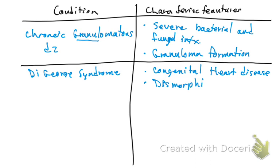DiGeorge syndrome also presents with dysmorphic facies. The third characteristic is hypocalcemia — due to parathyroid hypoplasia. DiGeorge syndrome also affects the T cells and the thymus. So the key features are cardiac anomaly, thymus involvement affecting T cells, hypocalcemia from parathyroid hypoplasia, and dysmorphic facies.